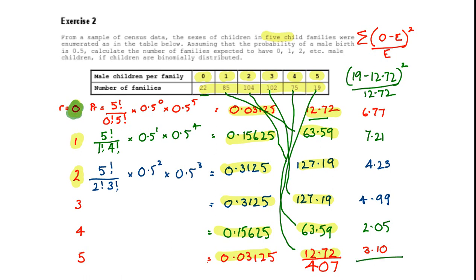If we add these up we'll get a total chi-squared of 28.34.